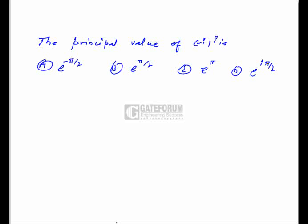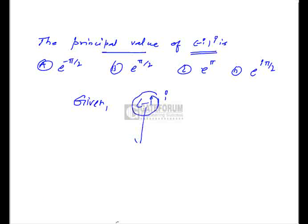In the final problem, we find the principal value of (minus i)^i. The given complex number is (minus i)^i. To simplify, we first convert minus i into modulus-argument (polar) form.